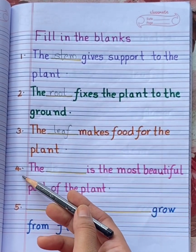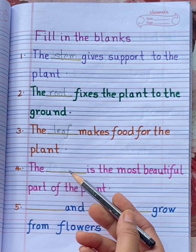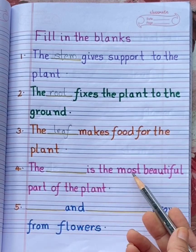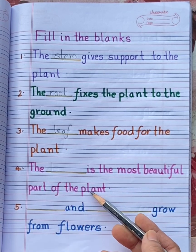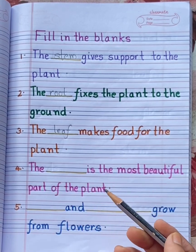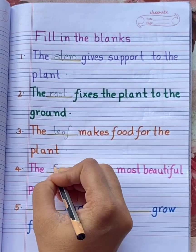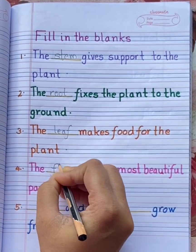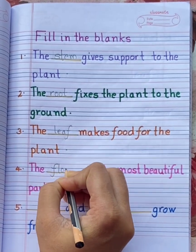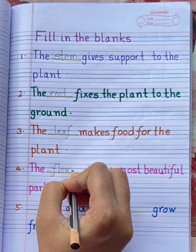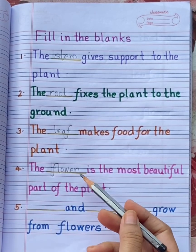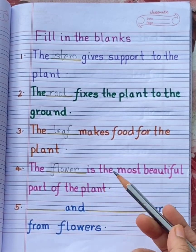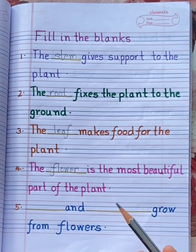Number 4: The dash is the most beautiful part of the plant. The answer is flower. F-L-O-W-E-R, flower. The flower is the most beautiful part of the plant.